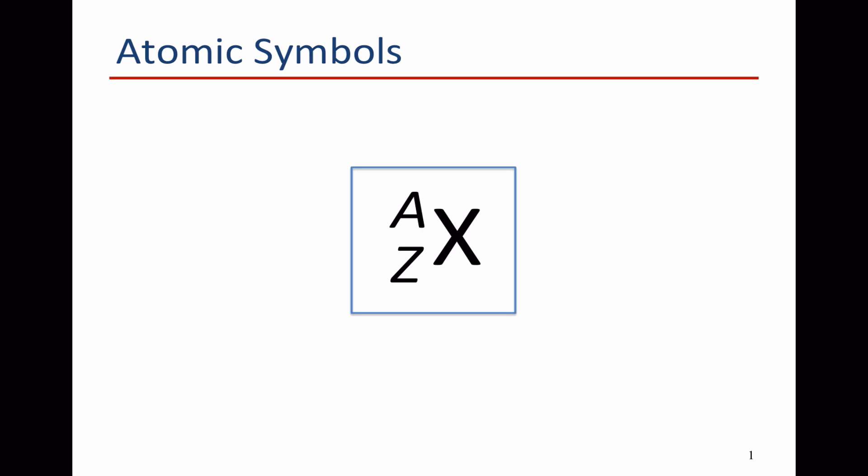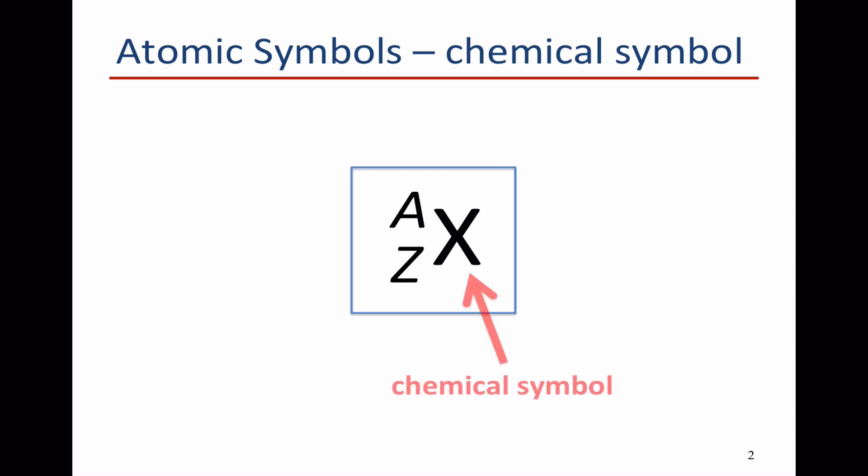From an atomic symbol we can work out which element the atom belongs to. We can work out the number of protons, the number of electrons, and the number of neutrons it contains. The first bit of information is the large letter X on this symbol, which is the chemical symbol.